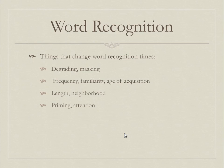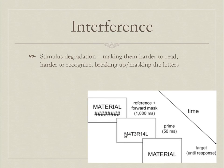Those were the four main tasks for measuring word recognition. Now, what are the things that affect word recognition — what makes you faster or slower? We're going to cover interference first — things that make you worse — and then facilitation. Interference impairs your word recognition ability.